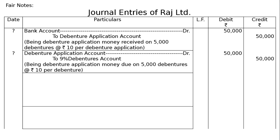Second entry — Debenture Application Account debited Rs.50,000 to 8% Debenture Account. (Note: by mistake I wrote 9% — please write 8% Debenture Account.) Being debenture application money due on 5,000 debentures at Rs.10 per debenture.